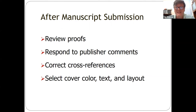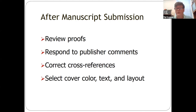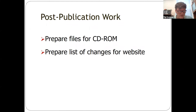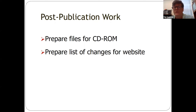We refer to our review of the proofs as passes. We receive a full PDF of the entire book, review it — that's the first pass — say these are the changes we need, they implement them, and we look again — that's the second pass. For the 12th edition we went through seven passes. Even after it's published there's some post-publication work: there was a CD-ROM produced of the 11th edition with special files we had to prepare, and we'll have something available on USB drive or as a download. We also prepare a list of changes for the website and typically prepare a presentation to give to the NAP.